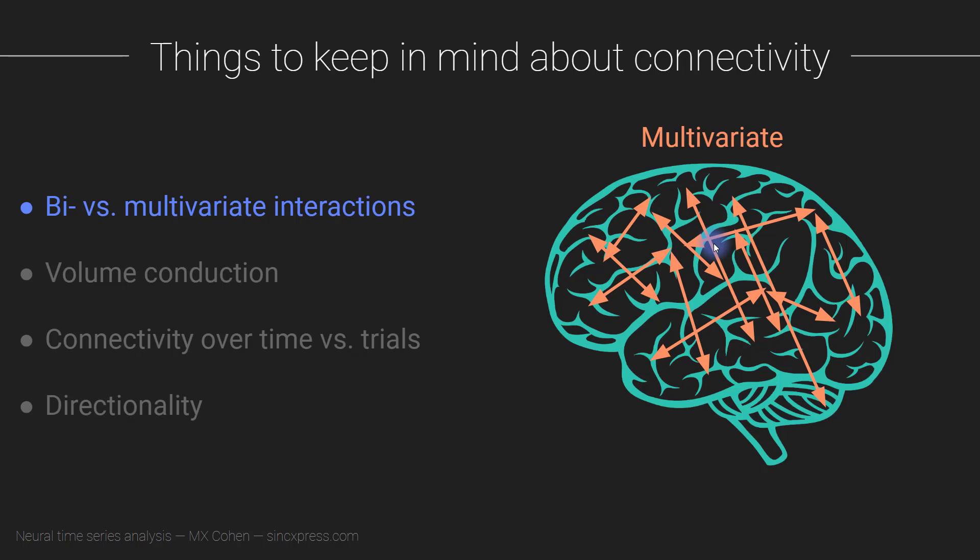Yet we tend to look at bivariate synchronization measures because those are better behaved, more robust to noise, easier to interpret, and so on.